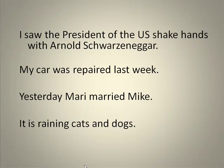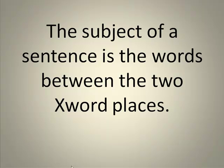It's basically just a placeholder for the subject. So what exactly is the subject of a sentence? Well, this last sentence — the idea of a placeholder — brings us one step closer towards really being able to answer that question. The subject of a sentence is the words between the two X word places.